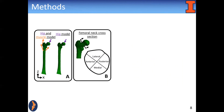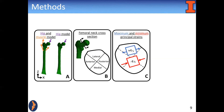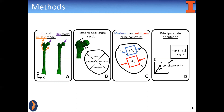Next, the lateral, medial, anterior, and posterior quadrants of the middle neck were identified based on anatomical landmarks. Finally, the median, maximum, and minimum principal strains and their orientations were calculated at the peak force during the first half of the stance phase.